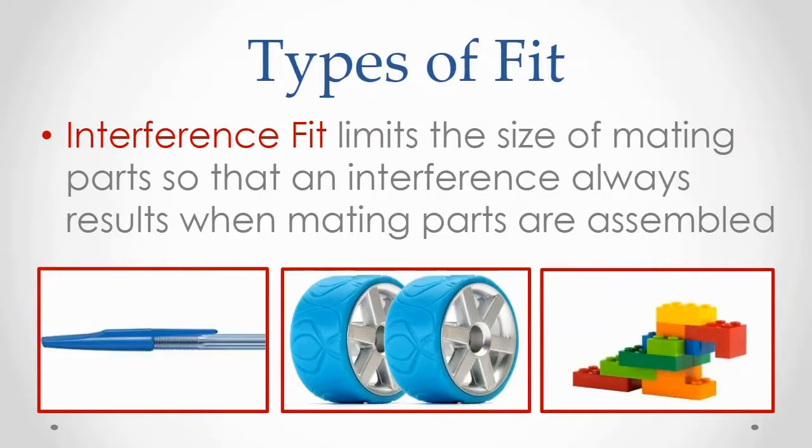Another type of fit is called an interference fit. In this case, the sizes of the mating pieces are limited so that there is always an interference between the parts when they're assembled. This type of fit is used when pressure between the parts is all that holds them together.